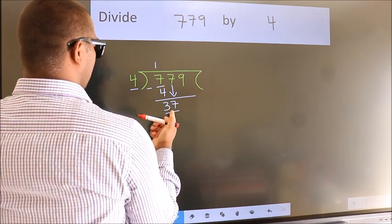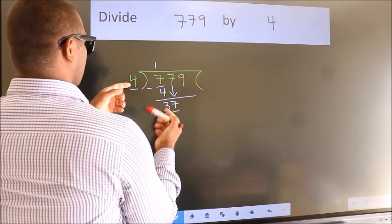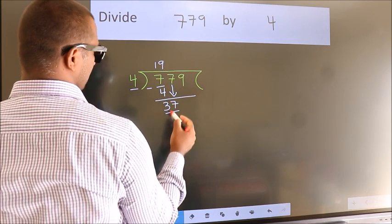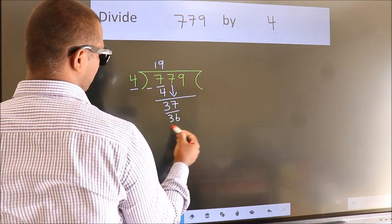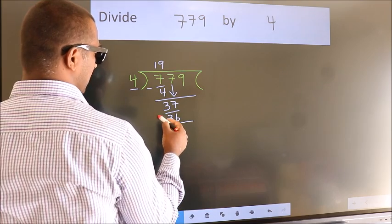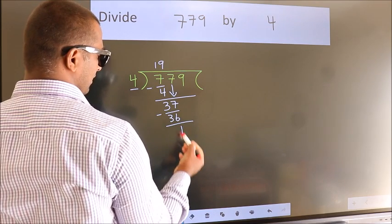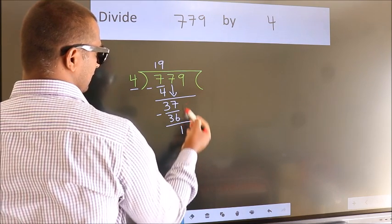A number close to 37 in the 4 table is 4 nines, 36. Now we subtract. We get 1. After this, bring down the beside number.